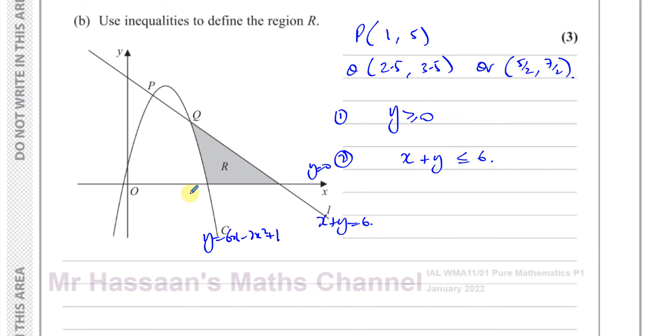And the curve's equation was y = 6x - 2x² + 1. The region is above this curve, so the third inequality would be y ≥ 6x - 2x² + 1. Now that defines this region here, but it also defines this region here. This region here is not shaded. It's also above the x-axis (y ≥ 0), also below x + y = 6, and also above the curve.